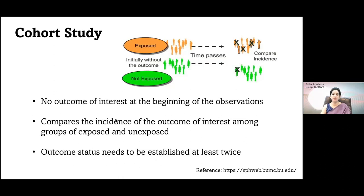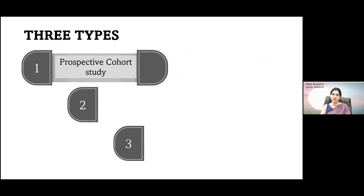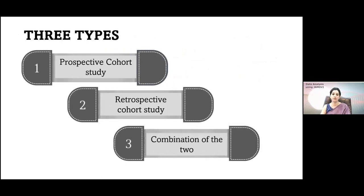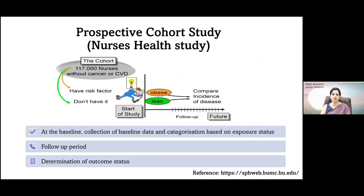The outcome status is established at least twice. At the beginning, you measure the outcome to confirm that participants are without the outcome. Then again at the end of the study, or until the time that outcome develops. Basically, relative risk is measured in a prospective cohort study. You can also do it in a retrospective cohort study, or a combination of both.